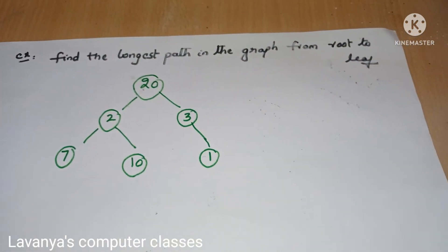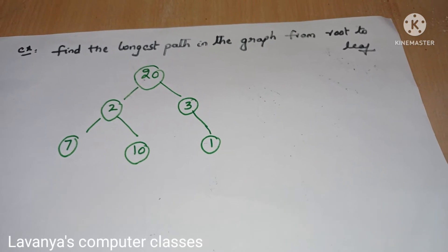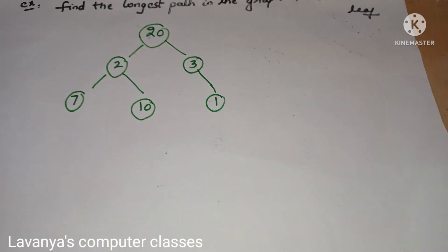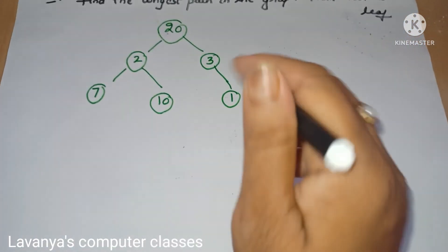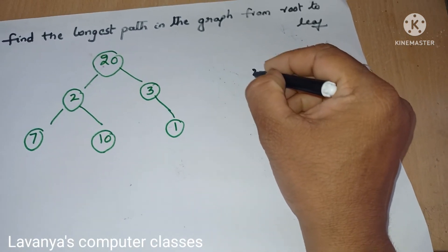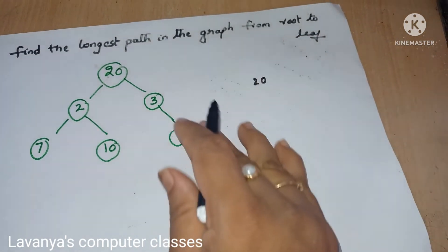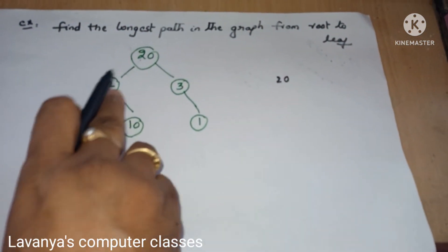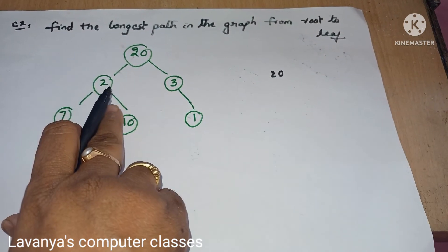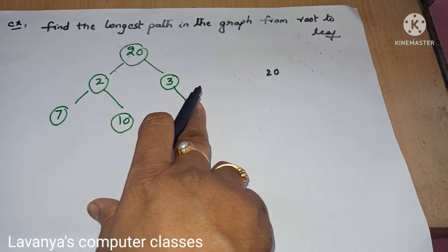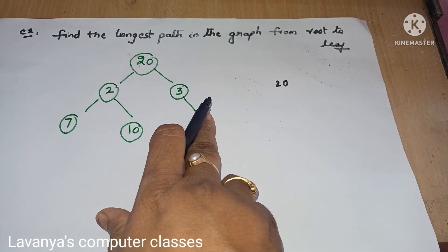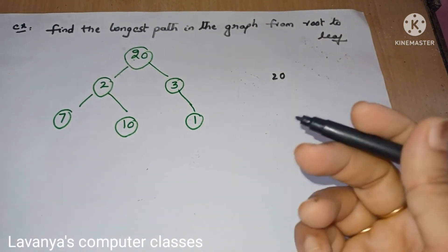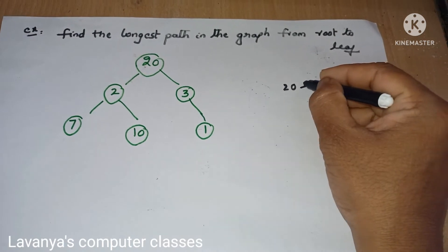Now I will give an example for greedy method. In this example I want to find the longest path in a graph from the root node to the leaf node. What I want is the longest path starting from the root node. The root node is 20. After that I want to find the longest path according to the weights. The left-hand side child is 2 and the right-hand side child is 3. Since I want the longest — the heaviest weight — I automatically select the right-hand side, which is 3.